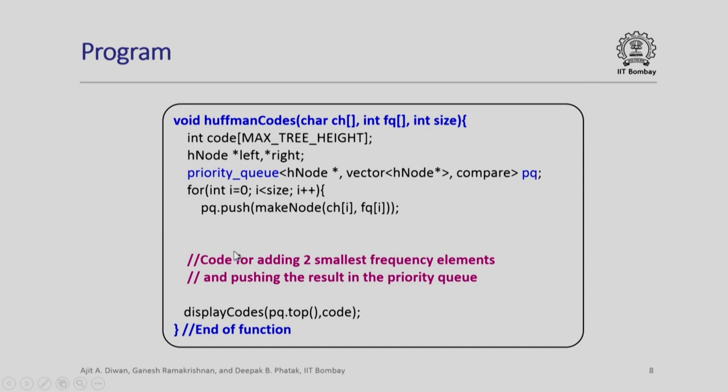Now, we have to add code for adding two smallest frequency elements and pushing back the result in the priority queue. At the end, we will have to display all the codes for which we invoke the display function.